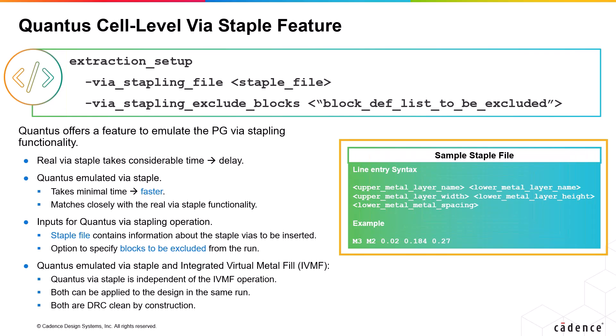The syntax for line entries in the staple file will have the following arguments: upper and lower metal layer names, followed by upper metal width and lower metal layer height, followed by lower metal-to-metal spacing, all in microns in that order. For example, here a VIA staple is inserted between M3 and M2 layers. The VIA staple M3 pad width is 0.02 micron, VIA staple M2 pad height is 0.184 micron, and VIA staple M2 pad to M2 pad spacing is 0.27 micron. There are separate line entries for each metal layer pair for the staple VIAs.